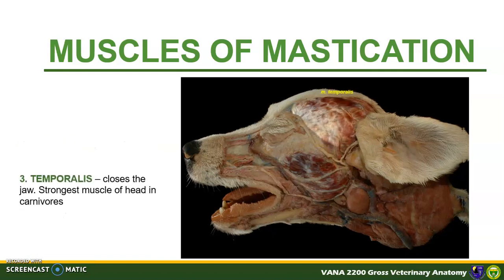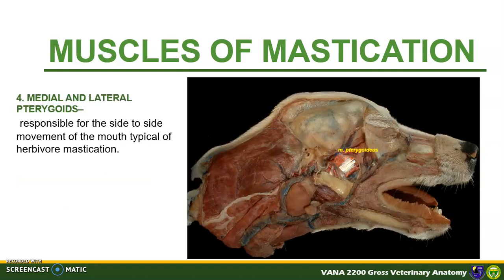The temporalis muscle closes the jaw as well. It is the strongest muscle of the head in carnivores and covers much of the dorsal and lateral surface of the skull. To complete the muscles of mastication, a deeper muscle called the medial and lateral pterygoids lies medial to the mandible. Here is a lateral view of the head with the ramus of the mandible removed to show the pterygoidus muscle. They aid the temporalis and masseter in closing the jaw, but they are also responsible for the side-to-side movement typical of herbivore mastication.